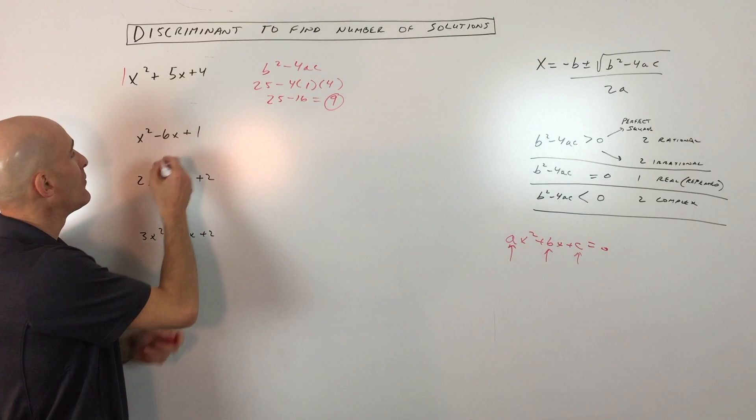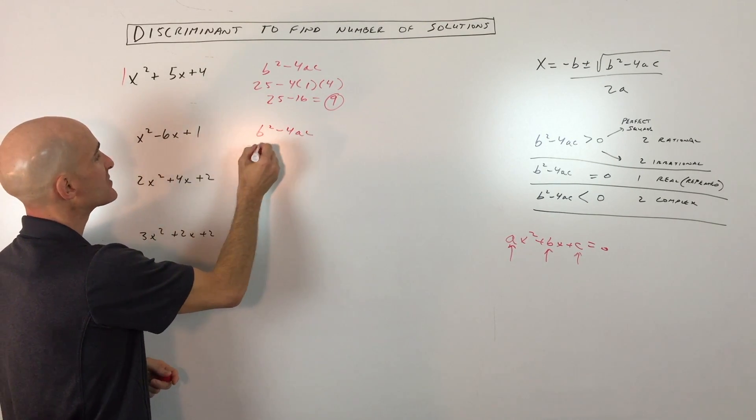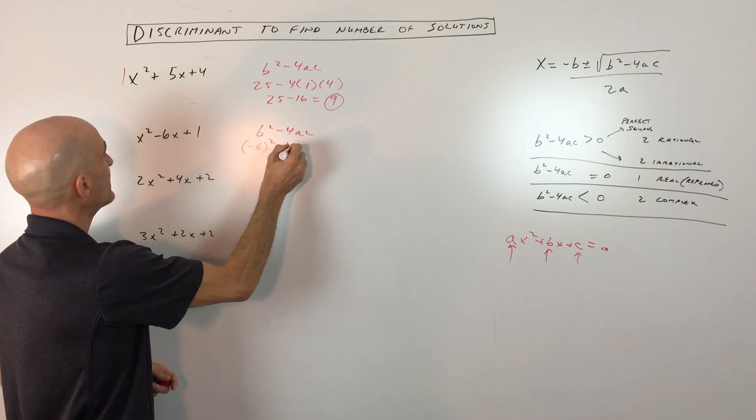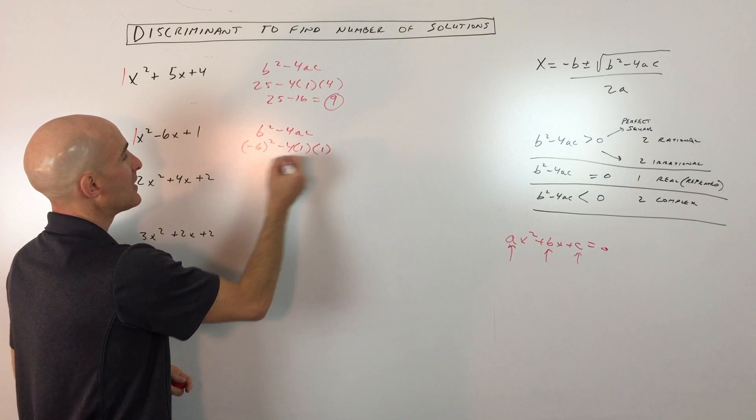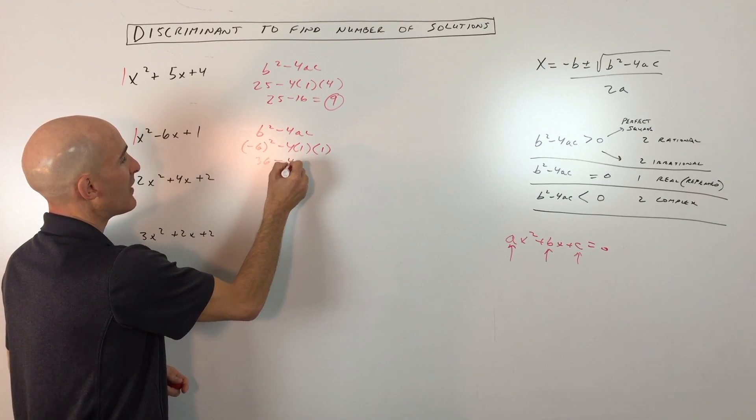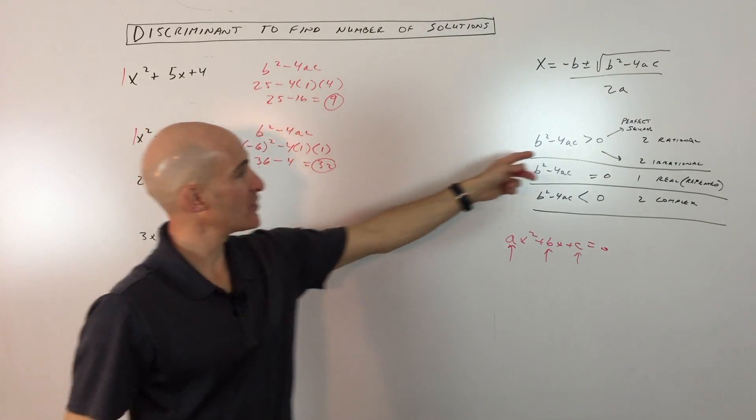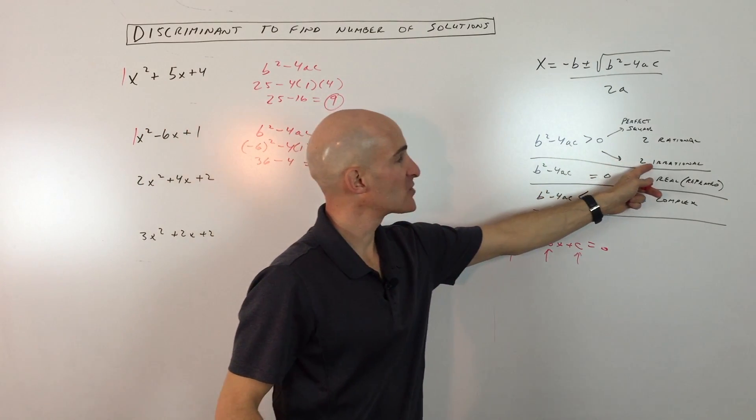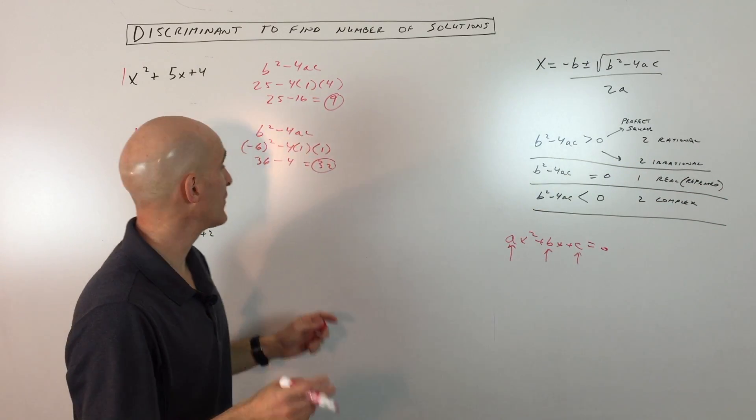So the next example, we've got b squared minus 4ac. So b squared would be negative 6 squared, minus 4 times a, which is 1, times c, which is 1, and you get 36 minus 4, which is 32. Now notice that 32 is positive, meaning greater than zero, but it's not a perfect square, so we're getting two real, but they're irrational solutions.